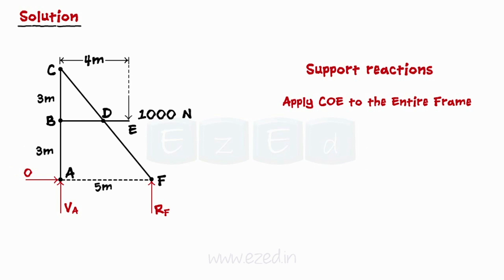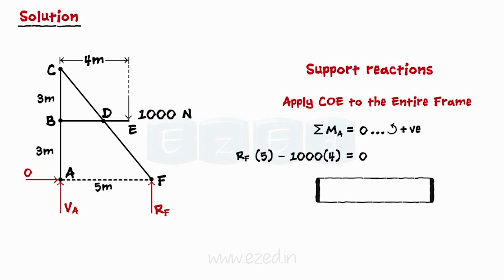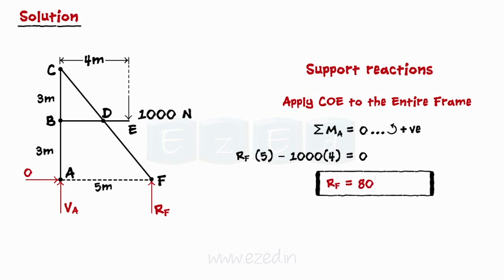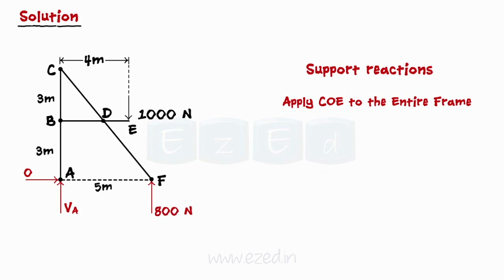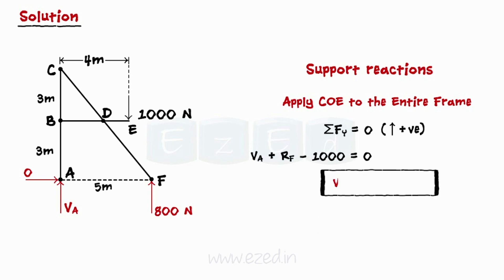Then, we equate the summation of moments of all forces about point A to zero. On simplifying, we get the normal reaction at point F to be 800 N. Then, equating the summation of all forces in the y direction to zero, we find that the magnitude of vertical reaction offered by support A is equal to 200 N.